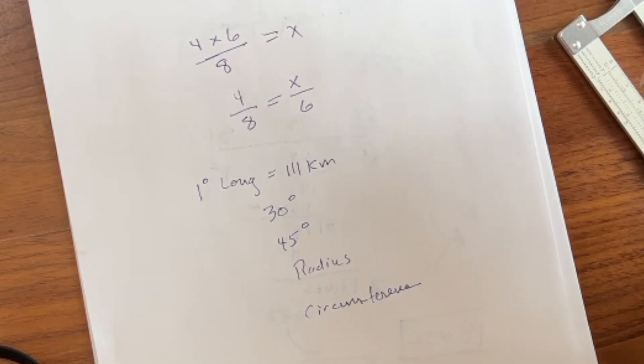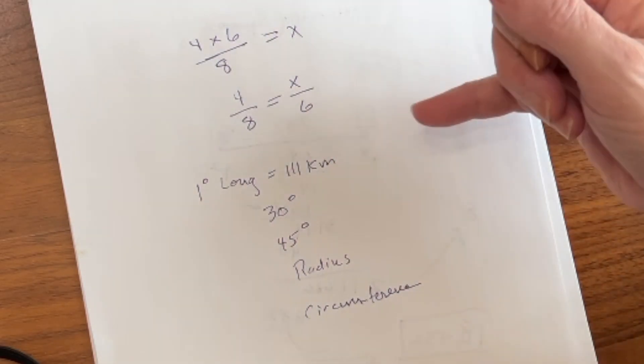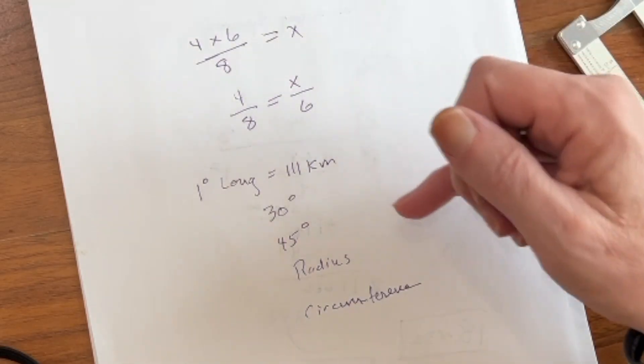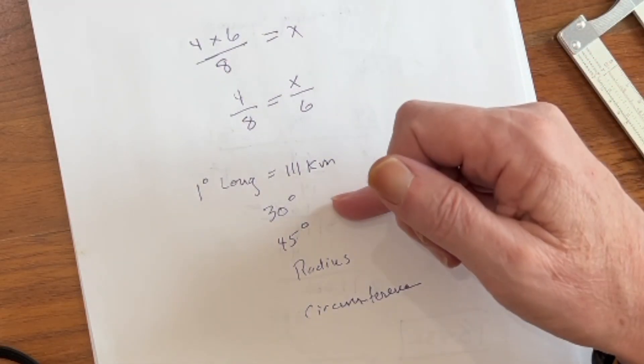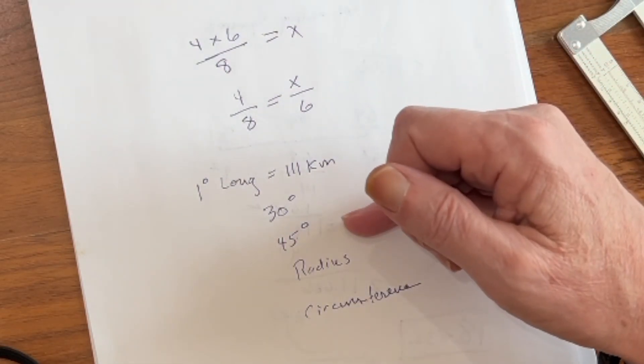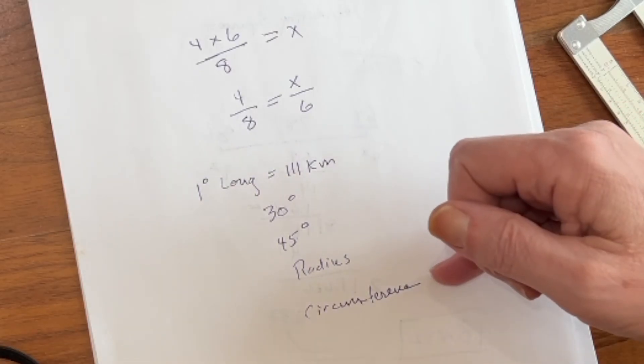Now, here's a typical problem that you may have seen in math. One degree of longitude equals 111 kilometers. So, how many kilometers would be 30 degrees or 45 degrees? Or, how about the radius or the circumference?